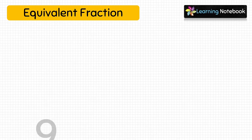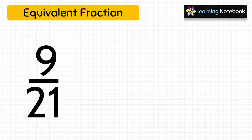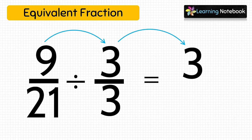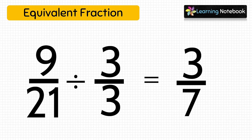We can also find equivalent fractions by dividing. For 9 by 21, divide both numerator and denominator by 3: 9 ÷ 3 = 3 and 21 ÷ 3 = 7. So 3 by 7 is an equivalent fraction of 9 by 21. This is how we make equivalent fractions — either by multiplying or dividing the numerator and denominator by the same number.